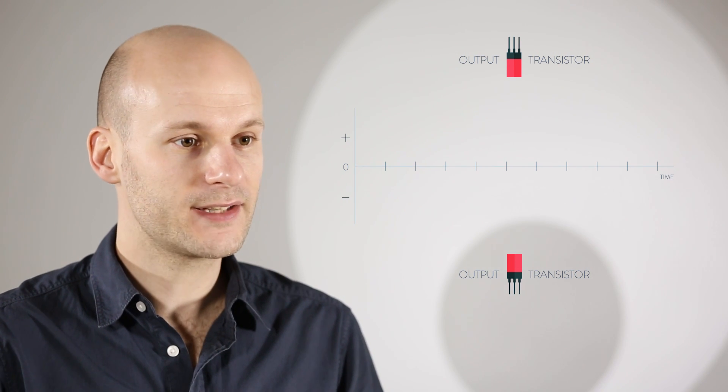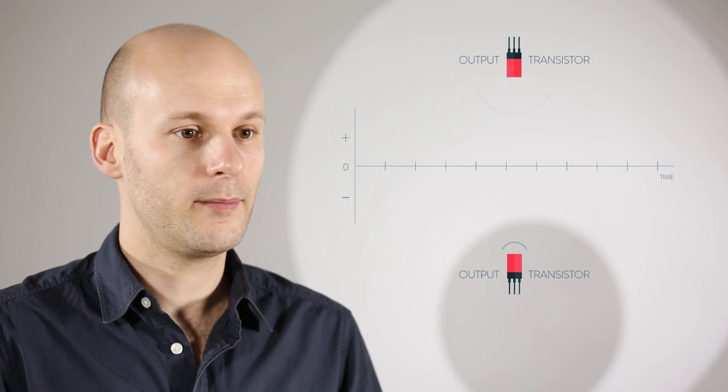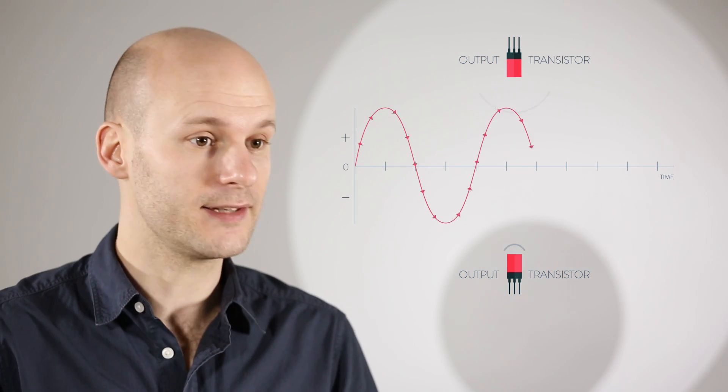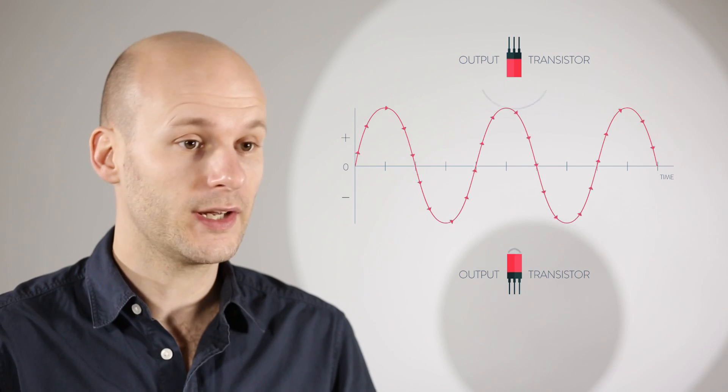These positive and negative transistors take turns to switch on and off, meaning that the current flows from one to the other, from positive to negative, and back again as the transistors continue to switch on and off.